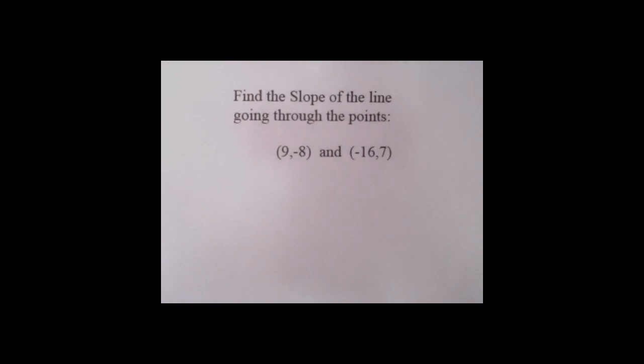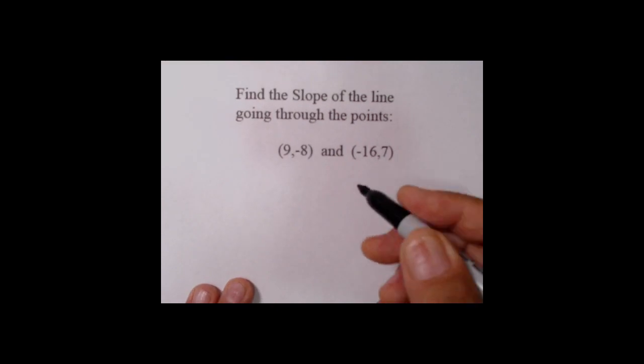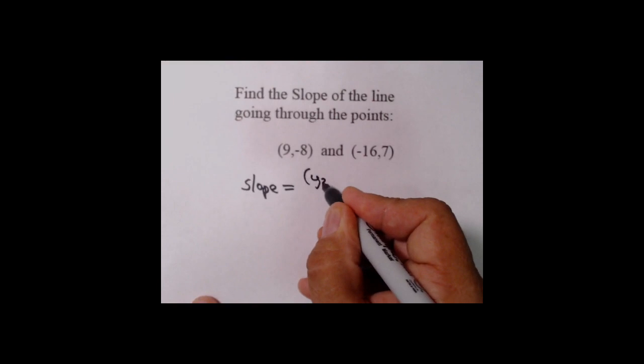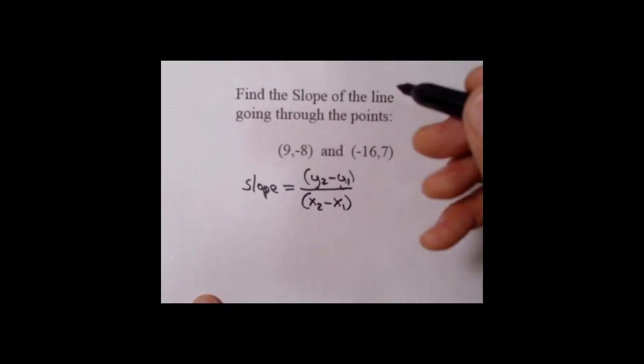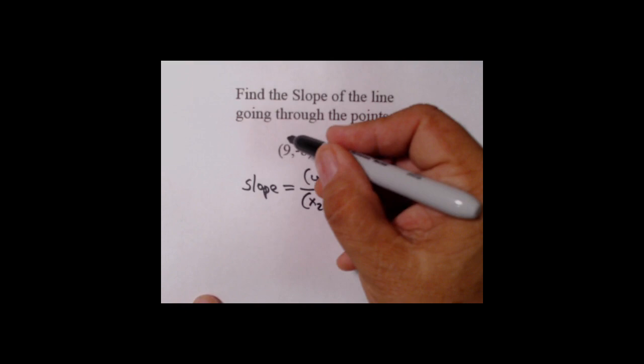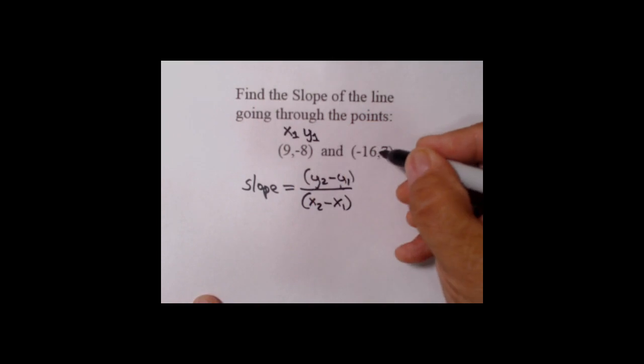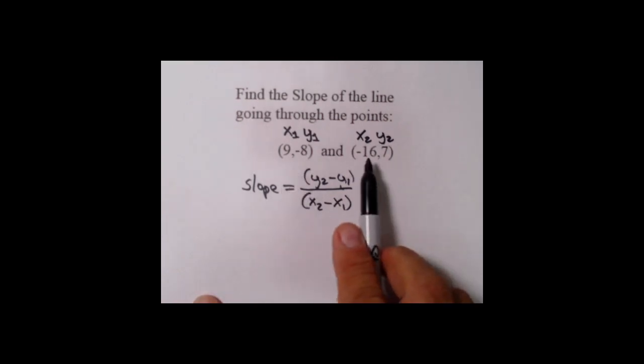Here's our first example. We're given two points: 9 comma negative 8, and negative 16 comma 7. These are points on the graph line. All we need to do is make use of our formulation, namely that slope equals Y2 minus Y1 over X2 minus X1. We'll take this first point to be our point number one, X sub 1, Y sub 1, and the second point will be point number two, X sub 2, Y sub 2.